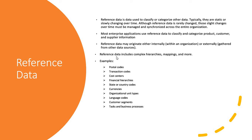Reference data from external systems must be translated into what your organization understands. Reference data is not just data mappings — it involves complex hierarchies, versioning, auditing, approval processes, and a lot more. Examples of reference data include postal codes, country codes, transaction codes, cost centers, financial hierarchies, currencies, organizational unit types, customer segments, and many more.